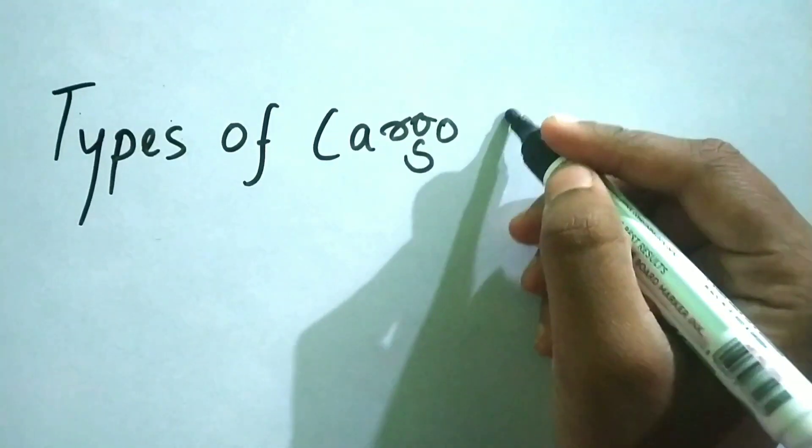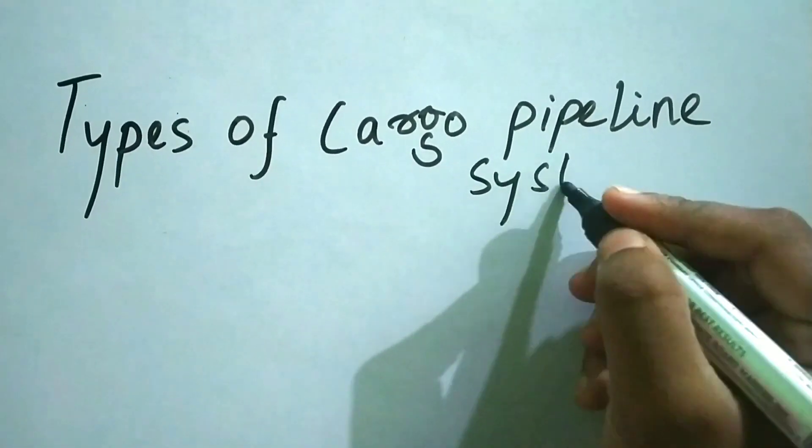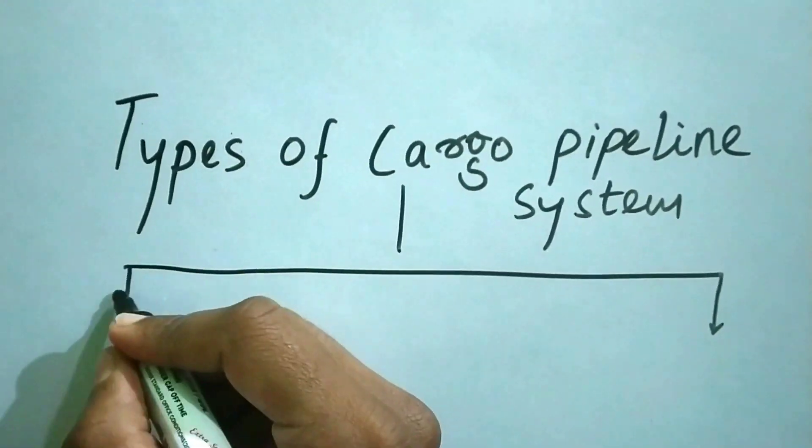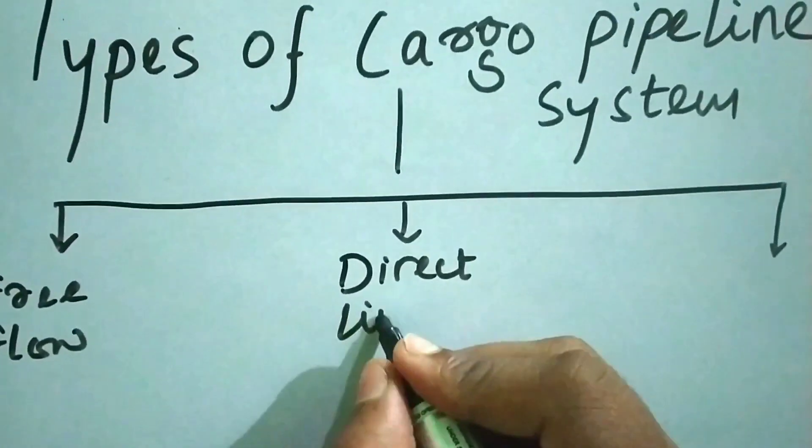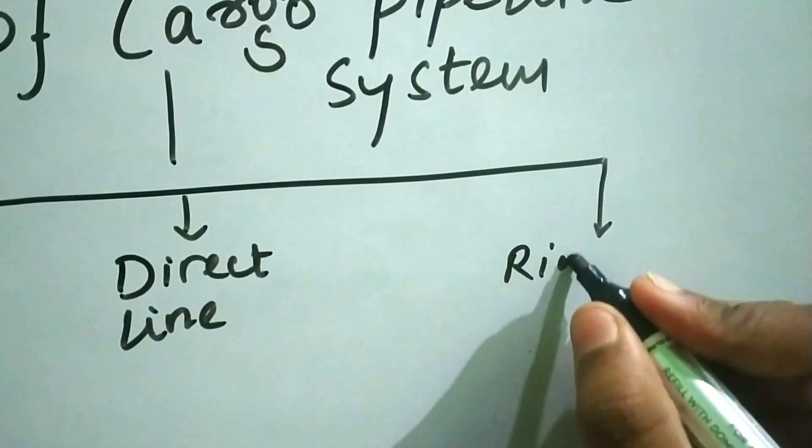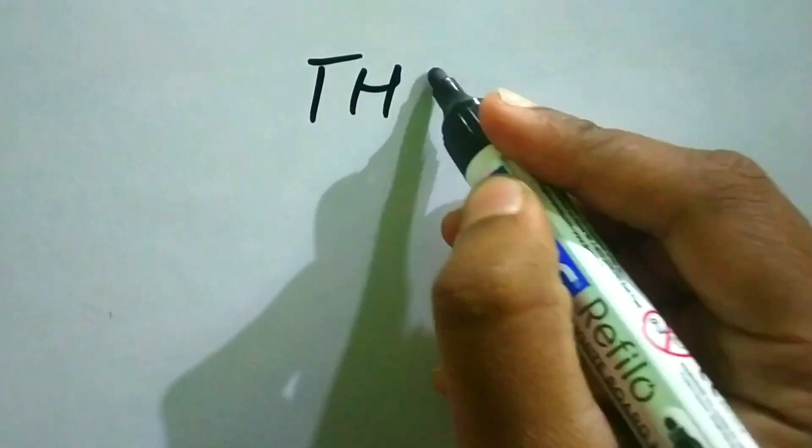Hello and welcome. In this video I will discuss the cargo pipeline system. First is the free flow system, second is the direct line system, and third is the ring main system.